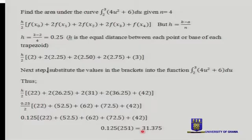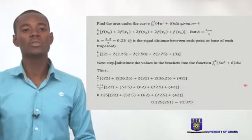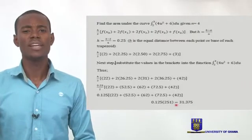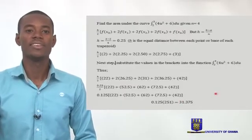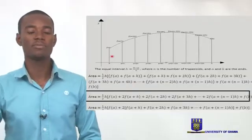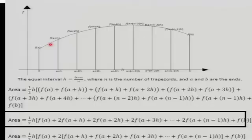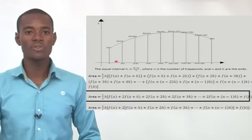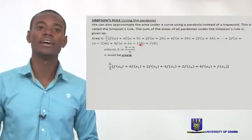Multiplying 0.125 by 251 gives us 31.375. This 31.375 is the approximated area under the curve over the interval. Because it's an approximation, we use the approximation sign rather than an equals sign. The reason it's an approximation is that when you fit trapezoids under a curve, there will be some spaces not accounted for — especially with steeper curves like parabolas — so we say it is an estimation.